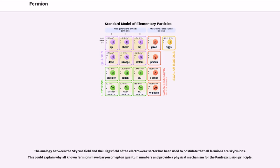The analogy between the Skyrme field and the Higgs field of the electroweak sector has been used to postulate that all fermions are skyrmions. This could explain why all known fermions have baryon or lepton quantum numbers and provide a physical mechanism for the Pauli exclusion principle.